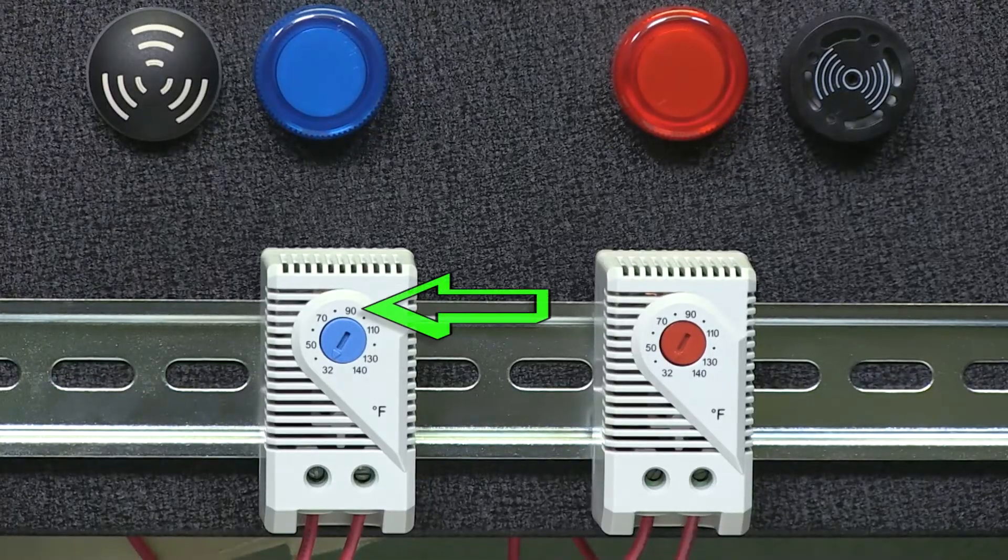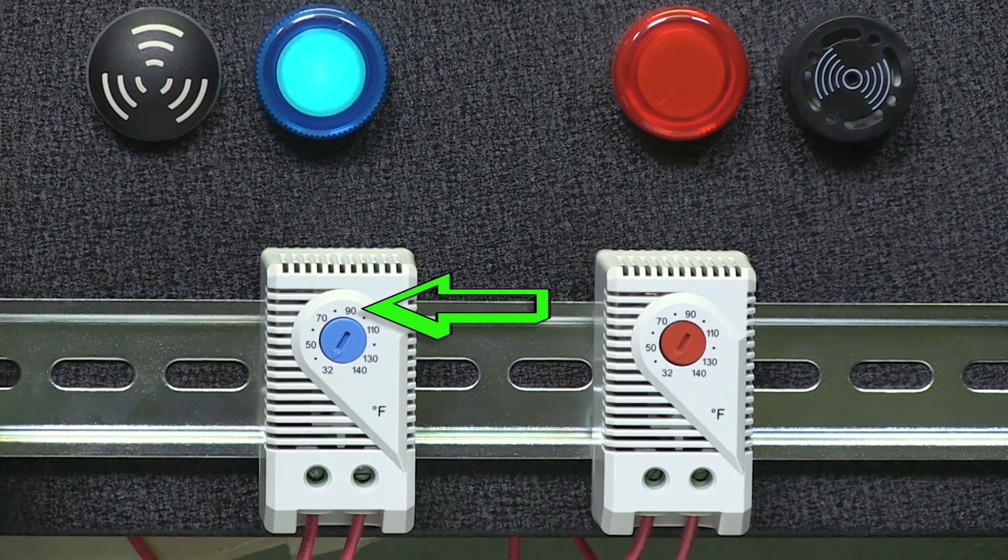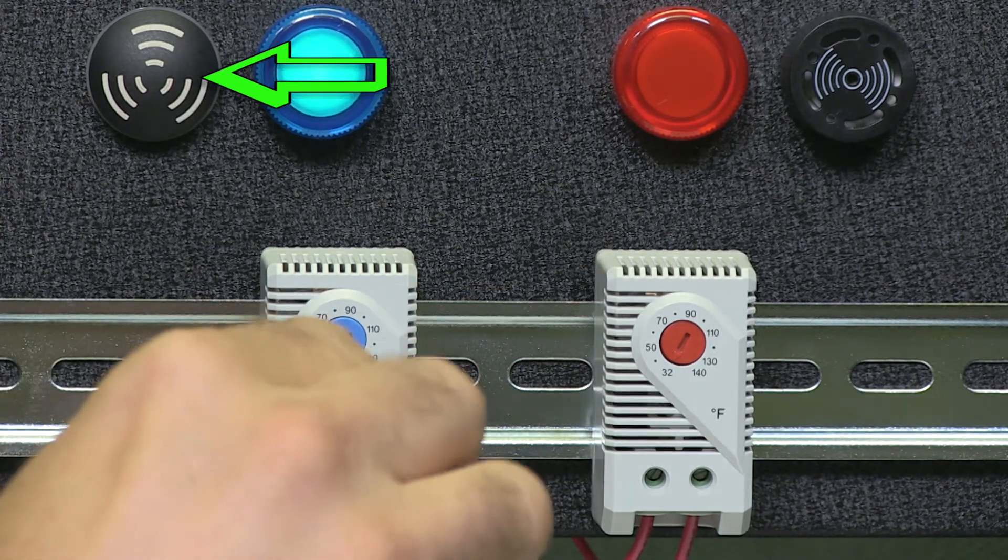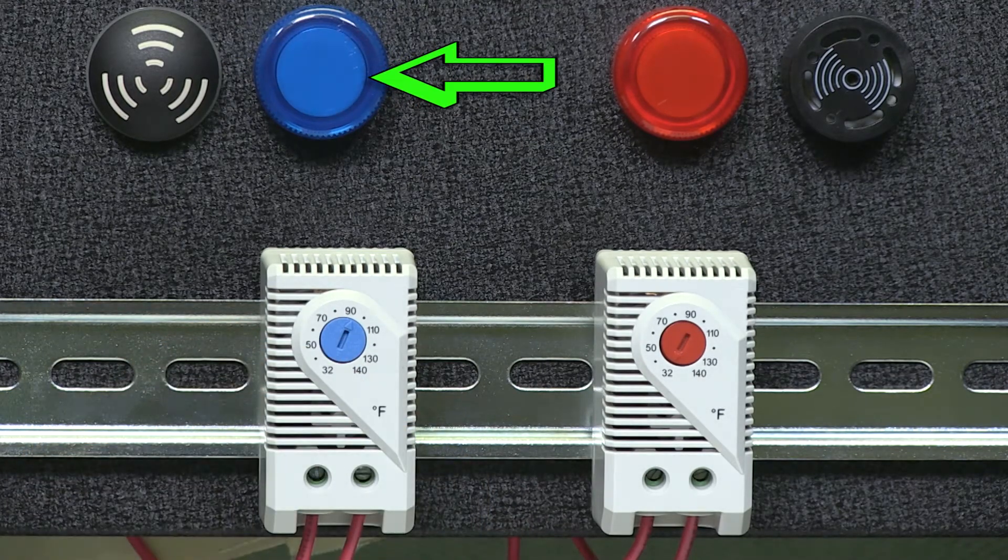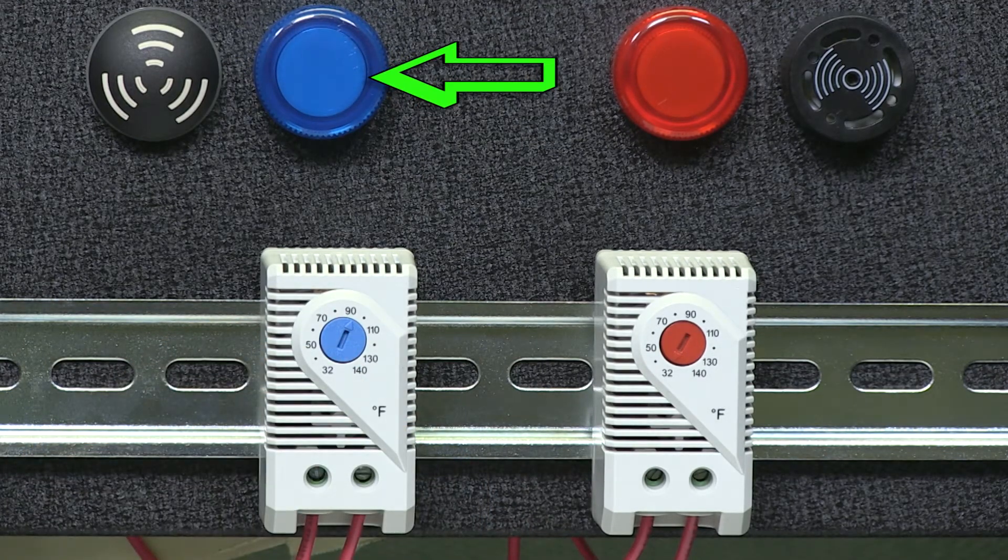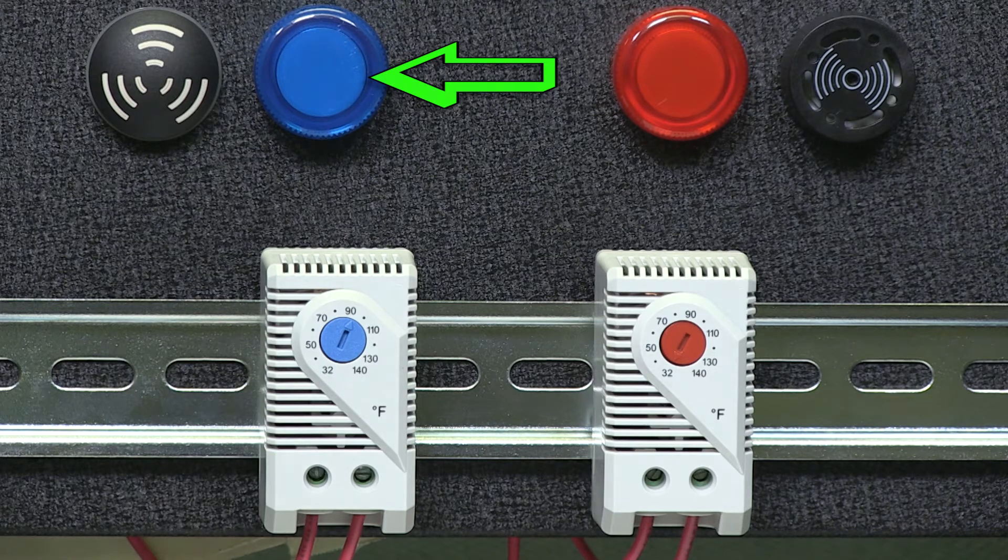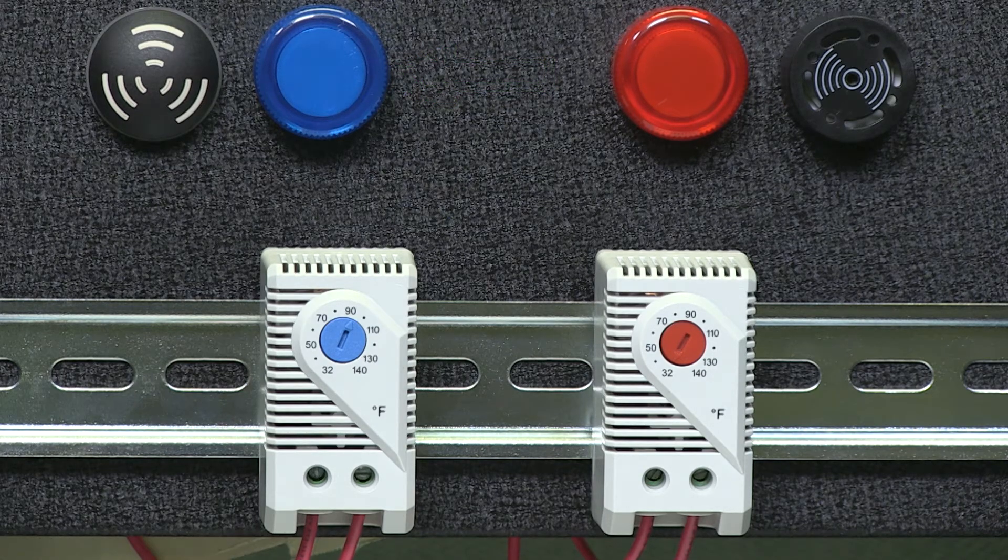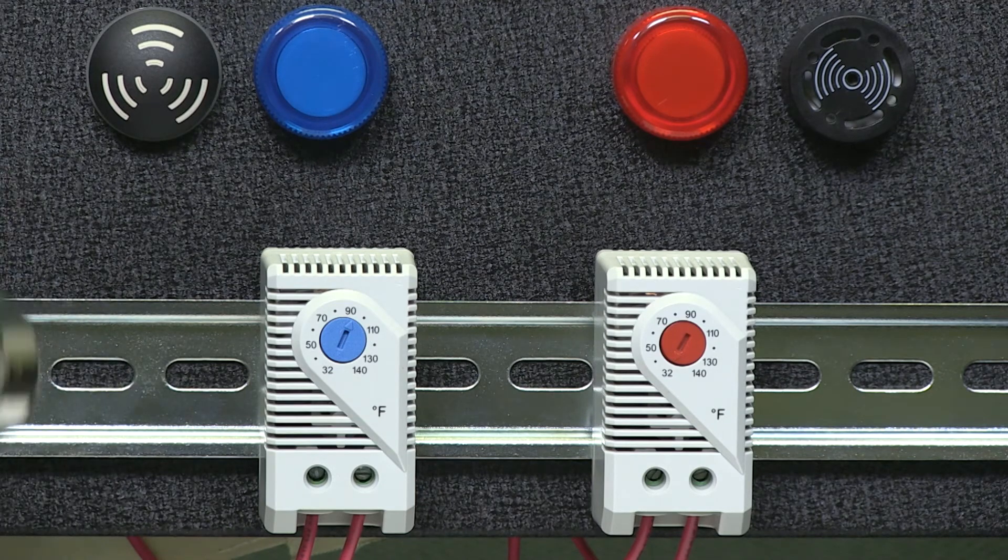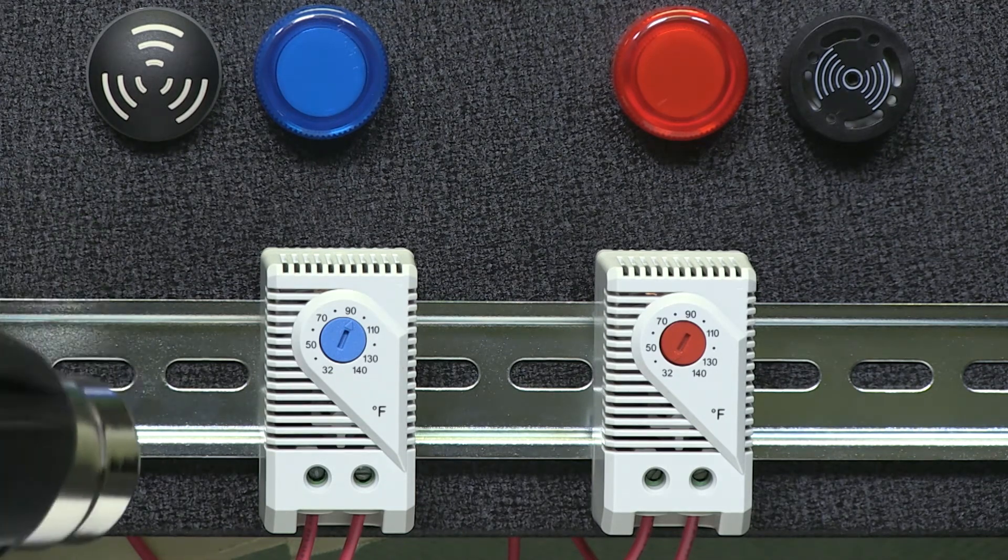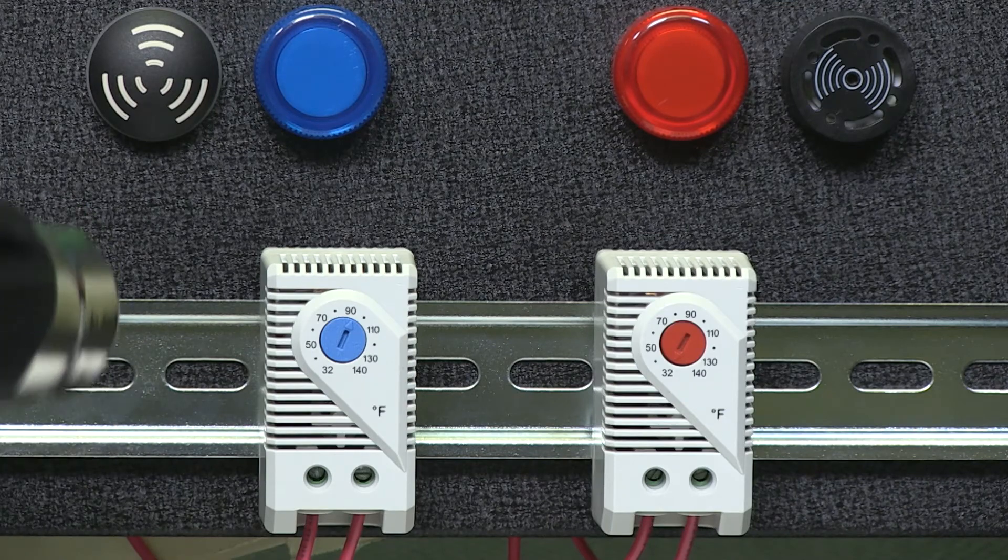Again, I set the temperature setpoint to somewhere near 90 degrees Fahrenheit. I have an audible alarm and on this thermostat a blue LED indicator to show when the contacts close. When I apply power, you will notice the contacts are open because our ambient temperature is 70 degrees Fahrenheit. We do not see an indication on the blue LED and do not hear an audible alarm.